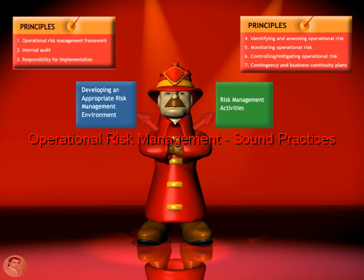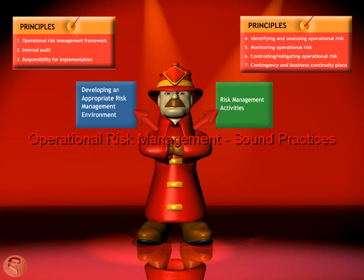Principle number six states that the bank should have policies, processes, and procedures to control and/or mitigate material operational risks. Principle number seven states that banks should have a business continuity plan to cope with severe business disruption.